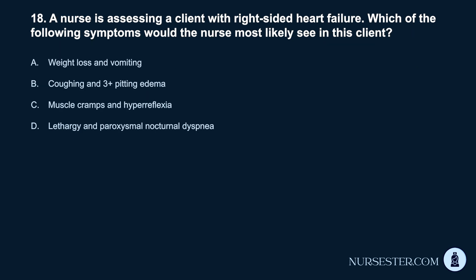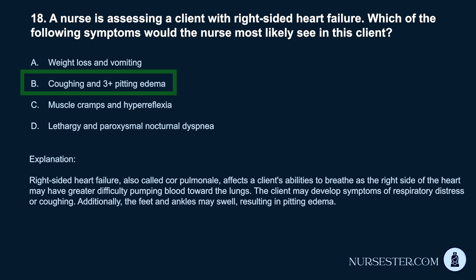Question 18. A nurse is assessing a client with right-sided heart failure. Which of the following symptoms would the nurse most likely see? a. Weight loss and vomiting. b. Coughing and 3-plus pitting edema. c. Muscle cramps and hyperreflexia. d. Lethargy and paroxysmal nocturnal dyspnea. Correct answer: b. Coughing and 3-plus pitting edema. Right-sided heart failure, also called cor pulmonale, affects the client's ability to breathe as the right side of the heart has greater difficulty pumping blood toward the lungs. The client may develop respiratory distress or coughing, and the feet and ankles may swell, resulting in pitting edema.